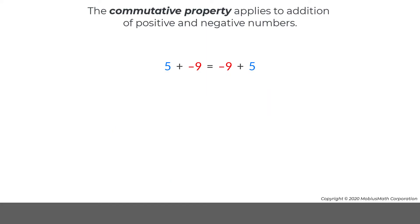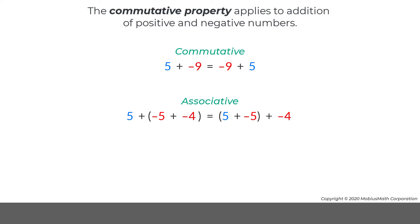This is also true if there are more than two addends, which means that both the commutative and associative properties apply to the addition of positive and negative numbers.